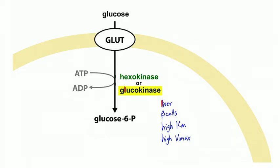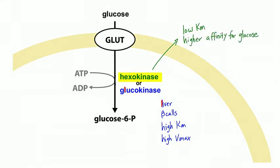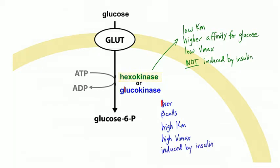Hexokinase also generates glucose-6-phosphate but has a low Km and much higher affinity for glucose - the glucose concentration doesn't have to be very high for this enzyme to work. Even when glucose levels are very low, hexokinase can trap that glucose by phosphorylating it. It has a low capacity and low Vmax. Hexokinase is not induced by insulin, whereas glucokinase is induced by insulin.